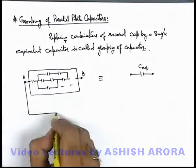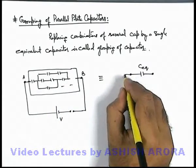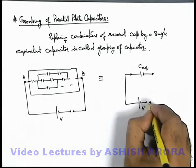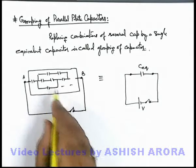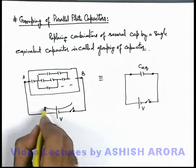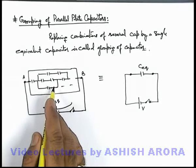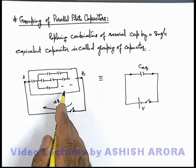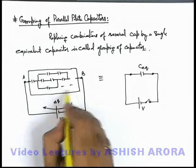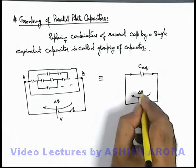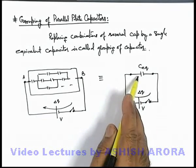Or we can say, if this group is connected across a battery of potential difference V along with a switch, and the equivalent capacitor is connected across the same battery of potential difference V along with a switch, and if these switches are closed down, then to charge the group of capacitors the battery will transfer a charge delta Q from one side to the other side of the group. The work done by the battery in charging this capacitor group up to its steady state will be delta Q times V. Then if this capacitor has the equivalent capacitance of the whole group, on closing the switch the same amount of charge delta Q will flow through the battery, and the same amount of work will be done by the battery in charging the single capacitor up to steady state.